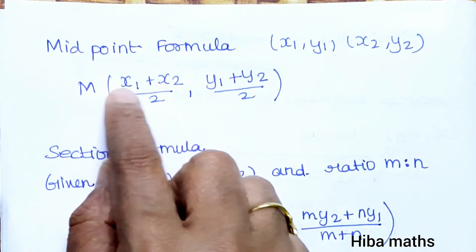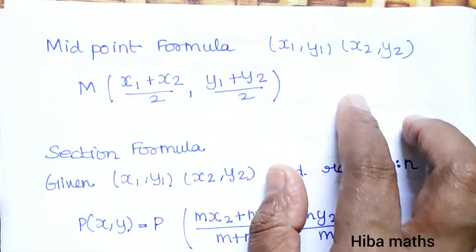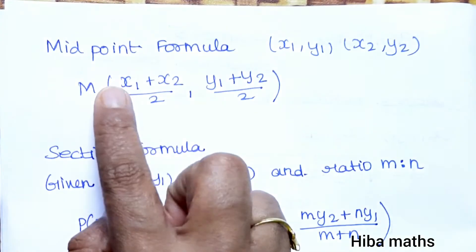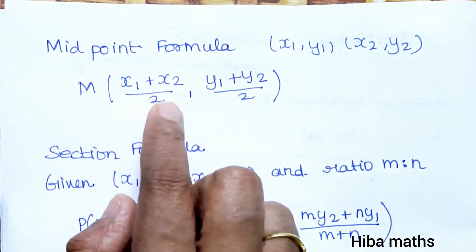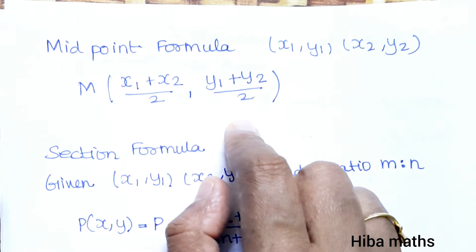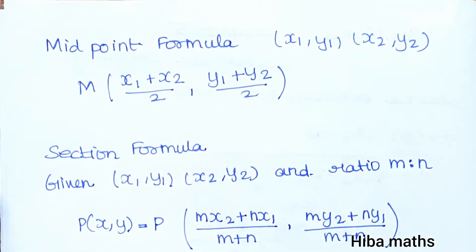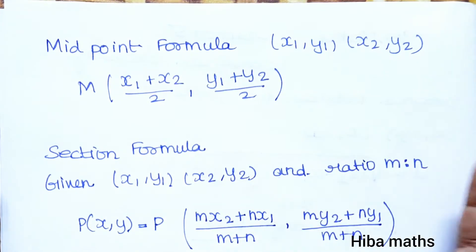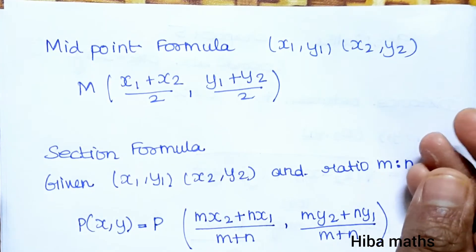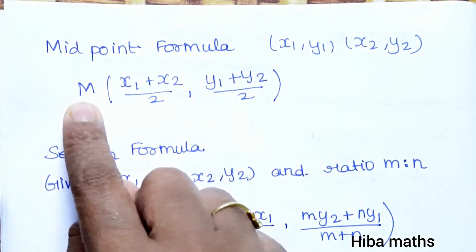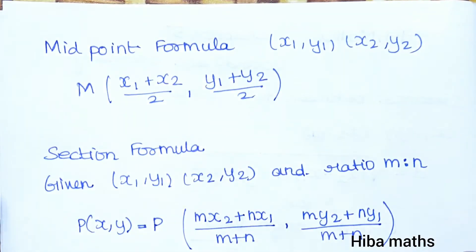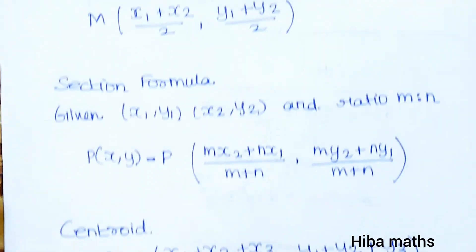The next topic is the midpoint formula. If you have two points, the midpoint is given by: x equals (x1 plus x2) divided by 2, y equals (y1 plus y2) divided by 2. This is how you find the midpoint of the following points.